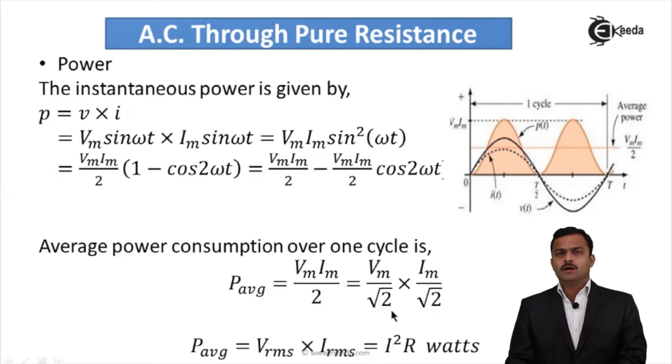One √2 will go to Vm, another √2 to Im. We know Vm/√2 is Vrms and Im/√2 is Irms. So actually, average power for this circuit is Vrms × Irms, or in other words, I²R, where I is the RMS value of current passing through the circuit.